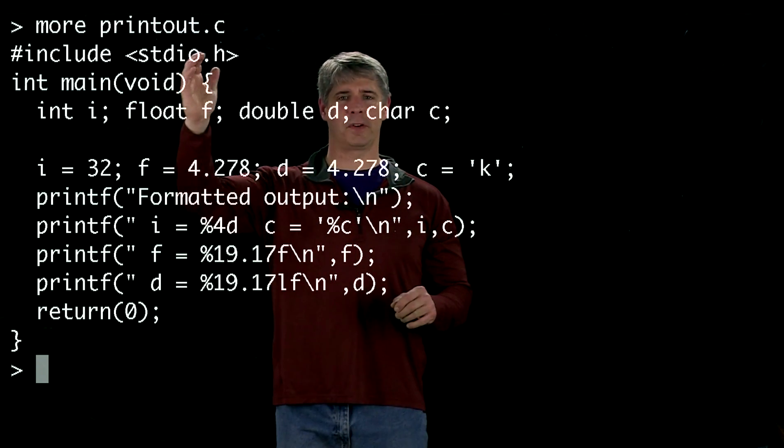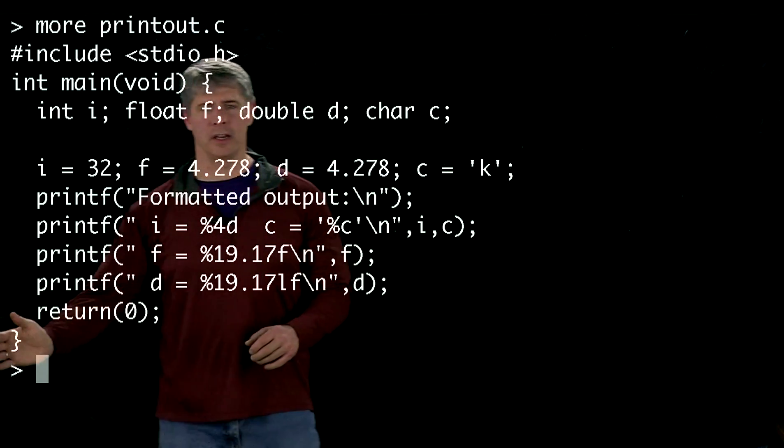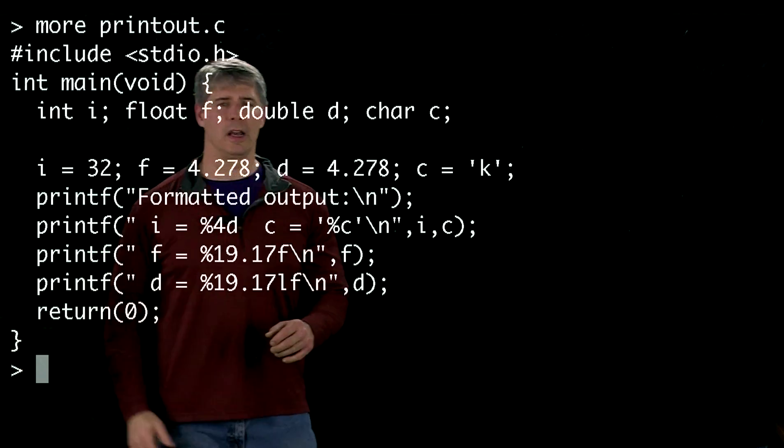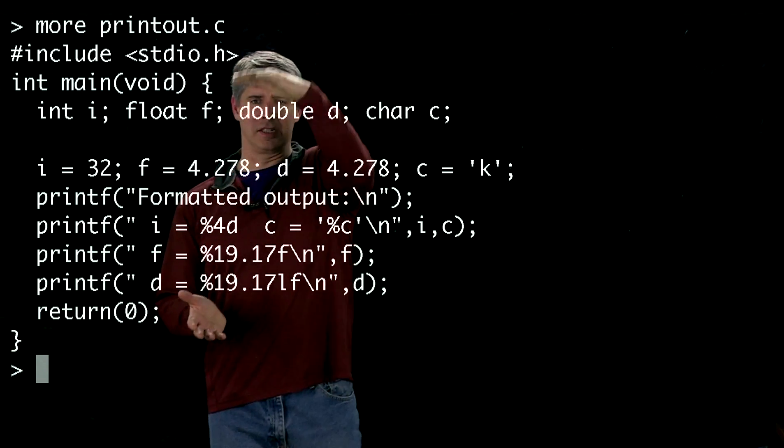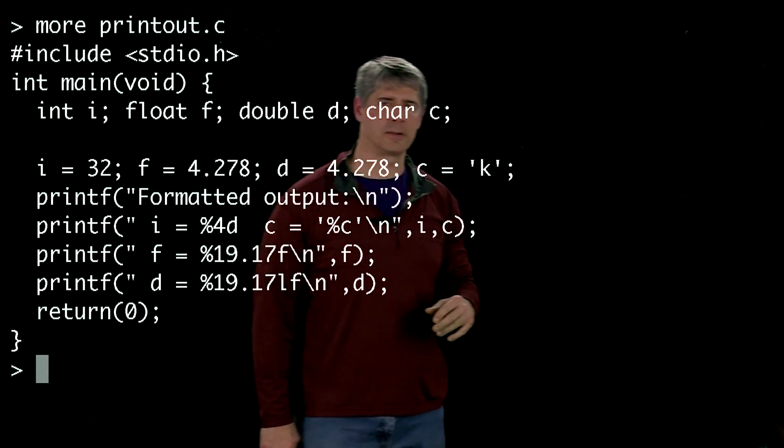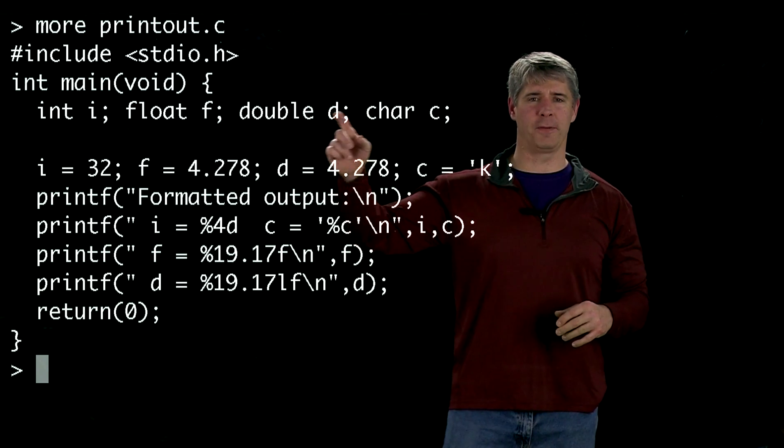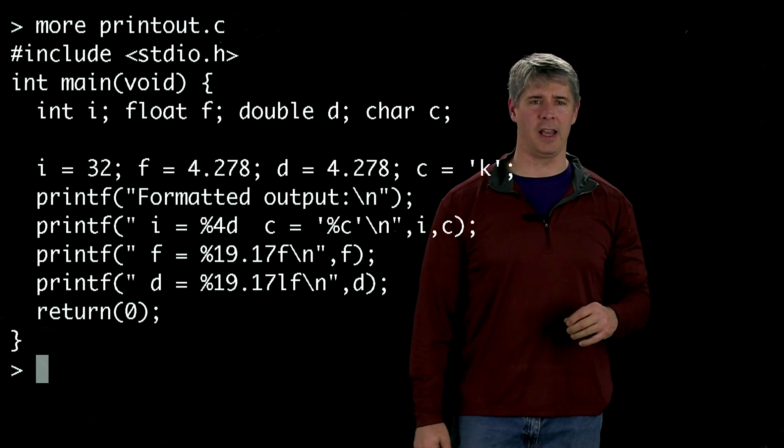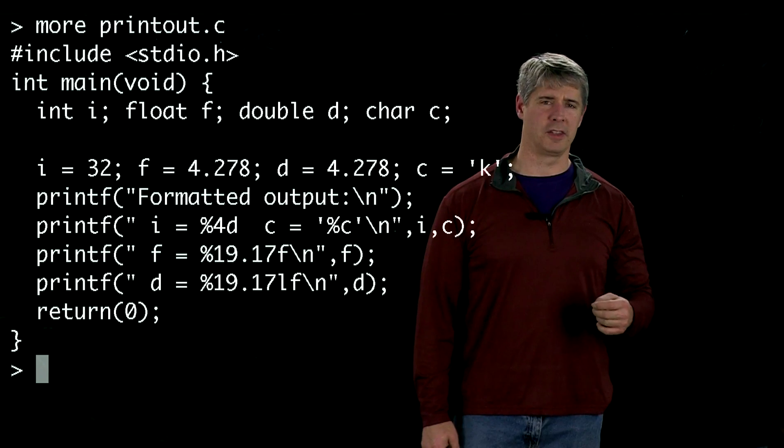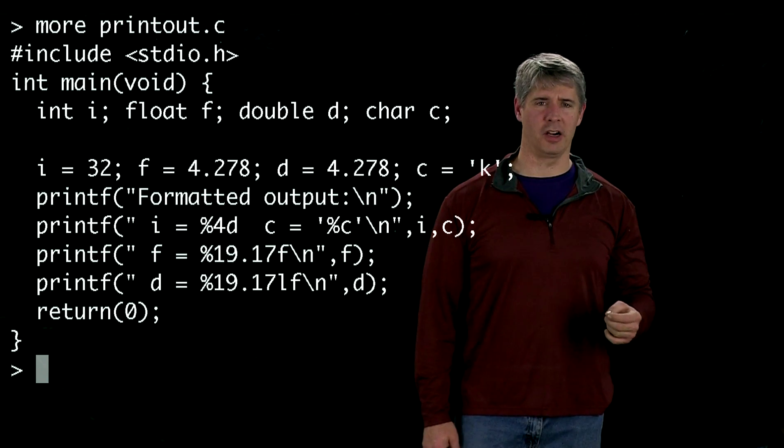So now after we have that, we've got an open brace here and a closed brace down here, and what that means is that the function is contained between those two braces. The first thing we do inside the function is we define four variables: the integer i, the float f, the double d, and the char c.